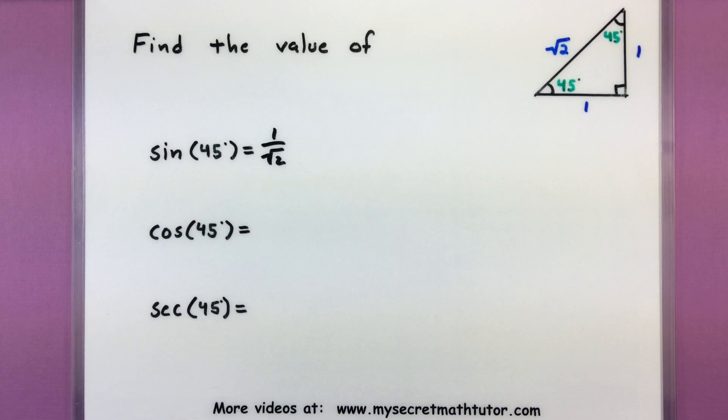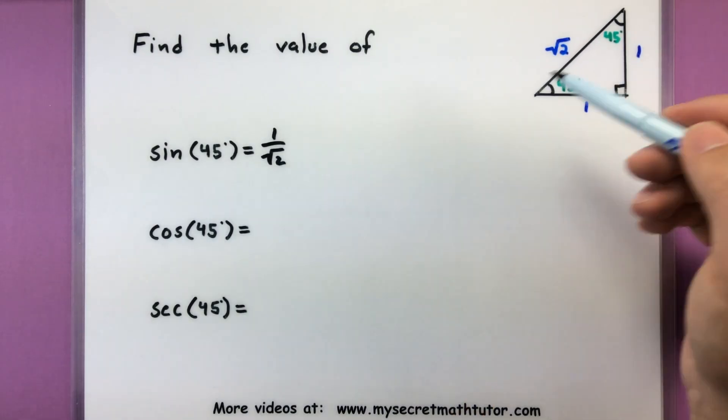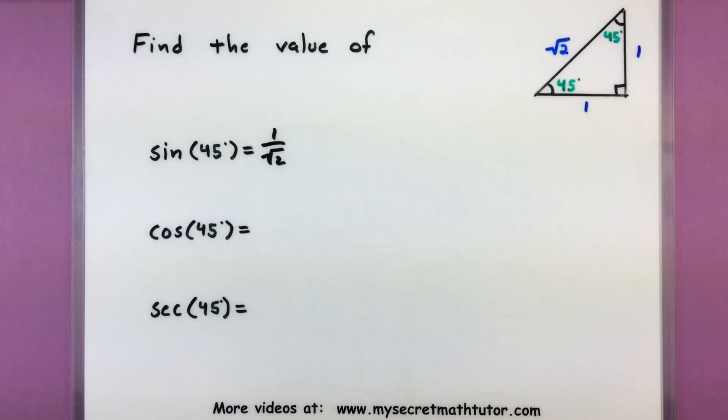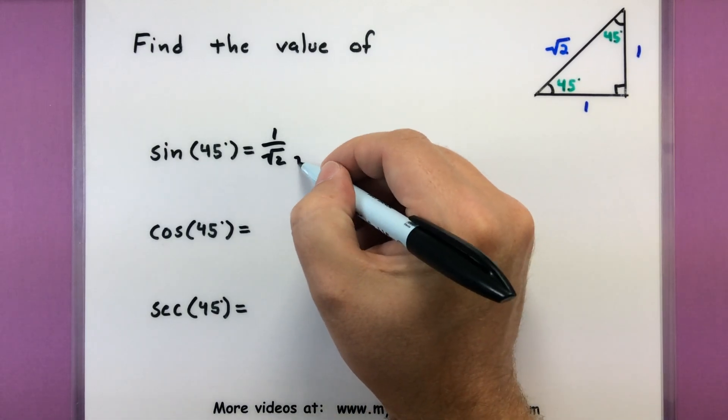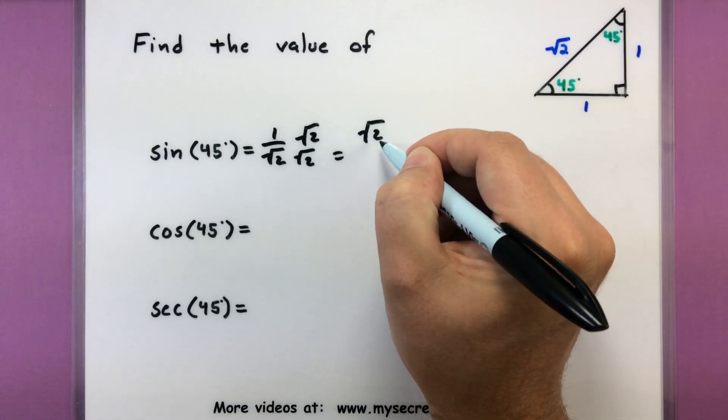Now you might be wondering, wait a minute, how come you don't use the other 45? Actually it doesn't matter with this particular triangle. Even if I used this 45-degree angle, the opposite over the hypotenuse would still be 1 over the square root of 2. Now let's go ahead and finish this by rationalizing that denominator. So square root of 2 over 2. And there's a good key value for this.